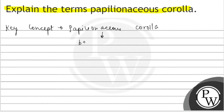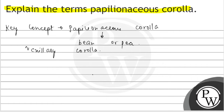Papilionaceae corolla is basically in a very simple word, it is in the bean and pea shape. This shape means bean and pea shape. An example can be seen. Papilionaceae corolla is also called the vexillary corolla. Now we will talk about the structure — basically there are five petals. One big petal, two small, and two fused.